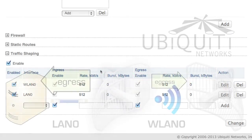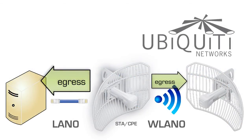The diagram shows a station radio configured as a simple bridge. Imagine that the station radio is a CPE with a host computer connected on the LAN interface and an AirMax AP connected to the WLAN interface. Traffic shaping is not only useful but recommended for keeping customers within fair bandwidth limits.